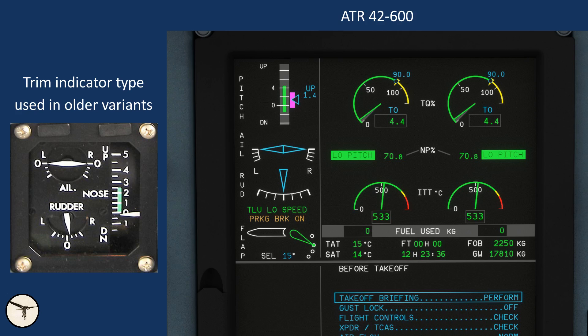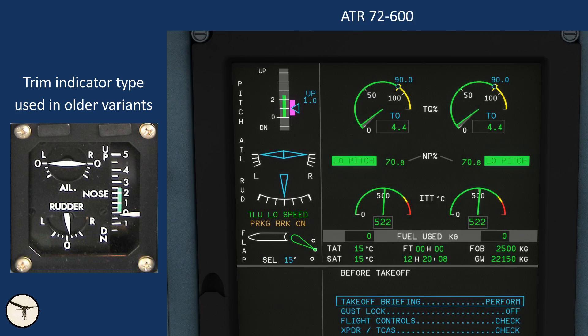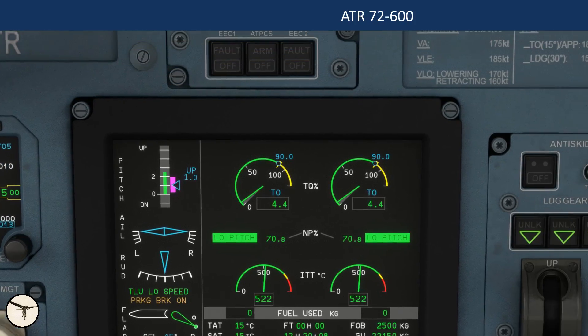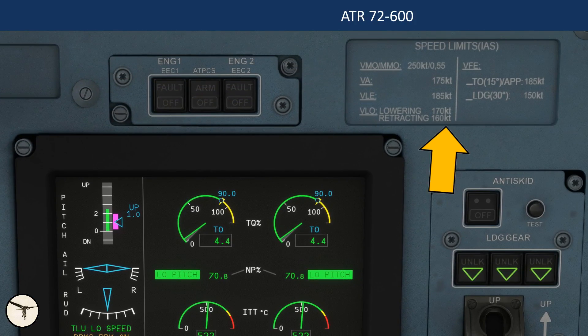Next, we have the trim indicator. On the 42, the green band ranges from 1.5 degrees down to 4.5 degrees up. On the 72, the range is from 0 to 2.5 degrees up. Finally, we have a placard showing the most important speed limitations. And this brings us to the next chapter.